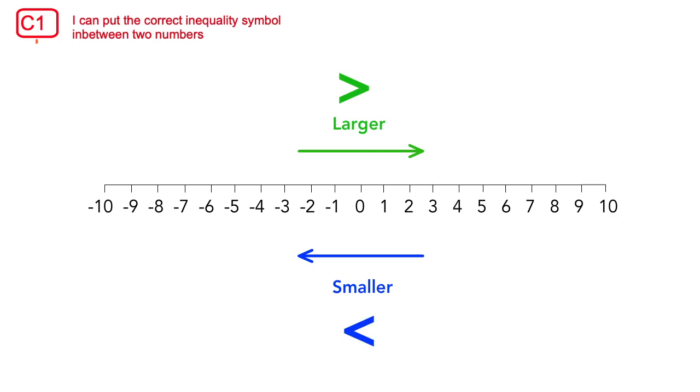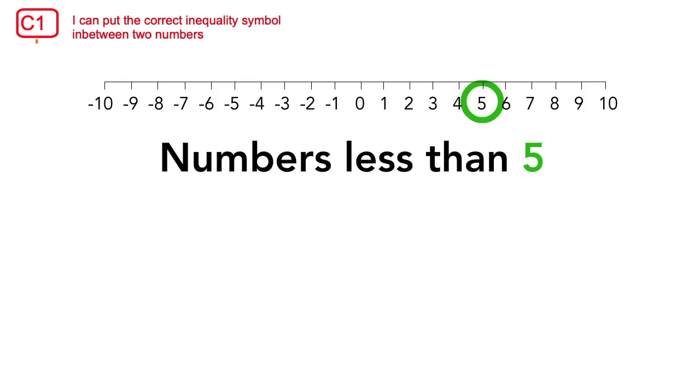And the less than symbol is always pointing to where the numbers are decreasing, or the lower numbers. What if we wanted to represent all the numbers that are less than a number, for example 5? We would then use algebra to show this. The variable x represents a number in this inequality that is less than 5.